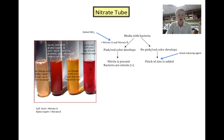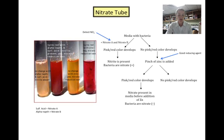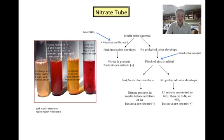If no pink or red color develops, a pinch of zinc is then added to the tube. Zinc is a good reducing agent because it is easily oxidized. When the zinc is added, there are again two possibilities. If a pink or red color develops, you know nitrite is present — the zinc reduced the nitrate, meaning the organism was not able to reduce nitrate on its own. Therefore, the bacteria is nitrate negative. If no pink or red color develops, that means nitrite is not present and the nitrate must have been reduced all the way to ammonia or nitrogen gas by the organism. Therefore, the bacteria is nitrate positive.